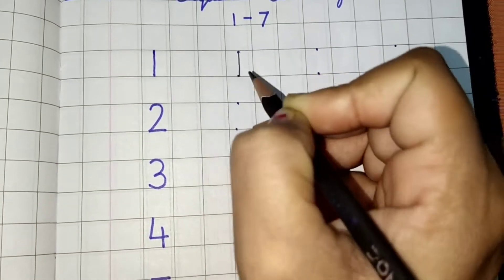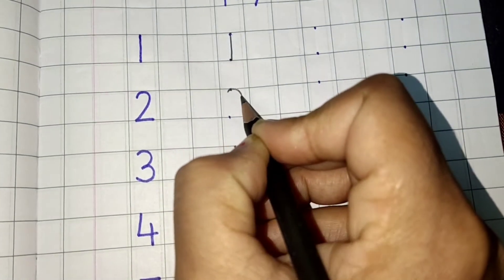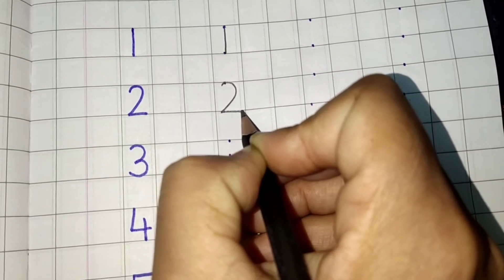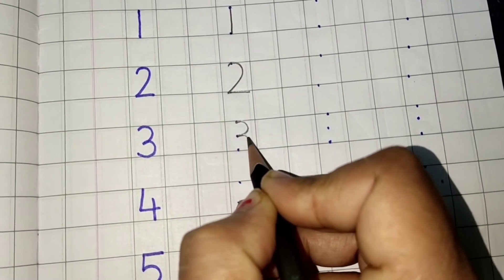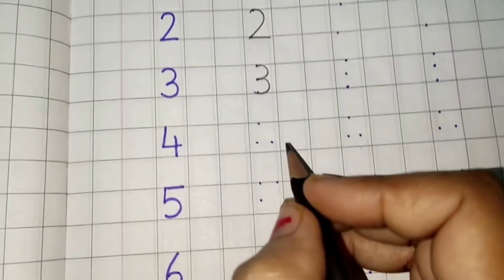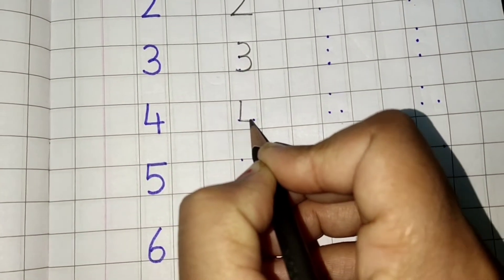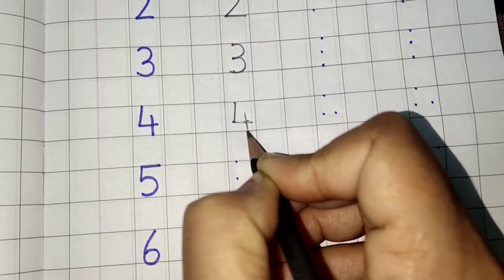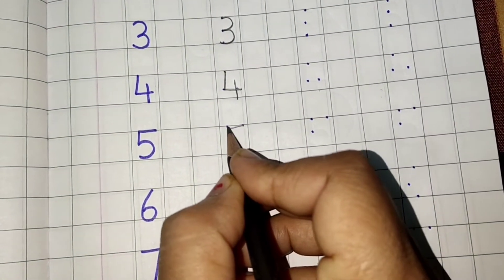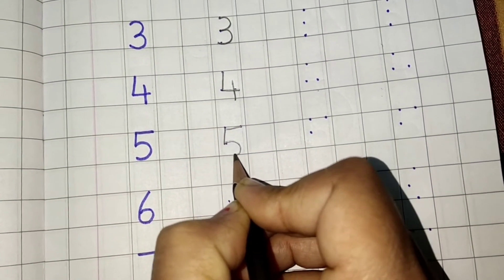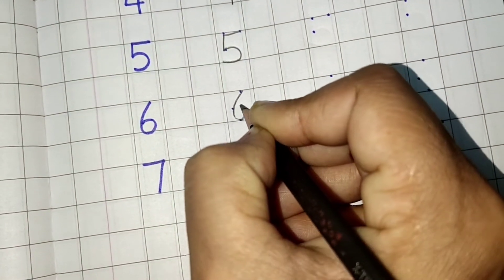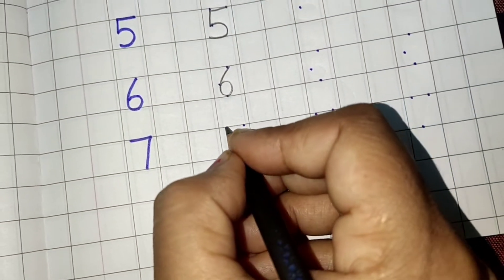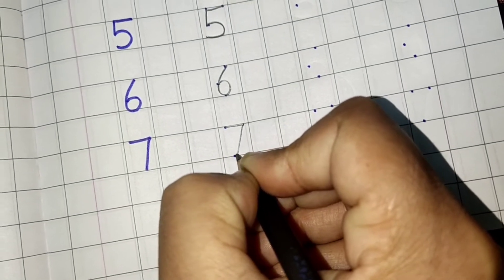Likhte time bolenge. One, two, three, four, five, six, seven.